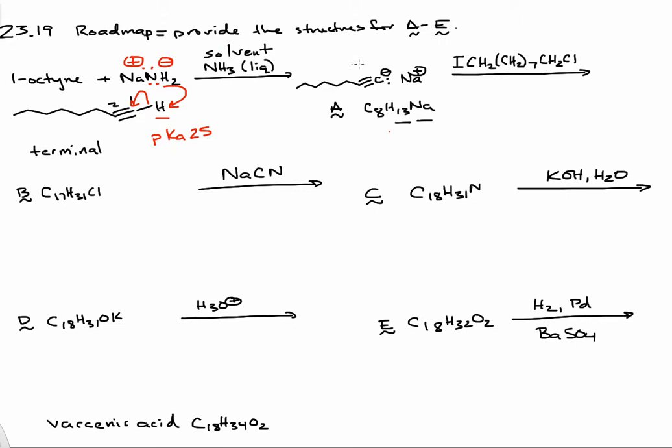We're treating this sodium acetylide with this compound here. This is a difunctional compound. It has an iodine and a chlorine. We're given a clue in the molecular formula here, C17H31Cl. So whatever we propose as the product, it still has to have the chlorine atom in the product.